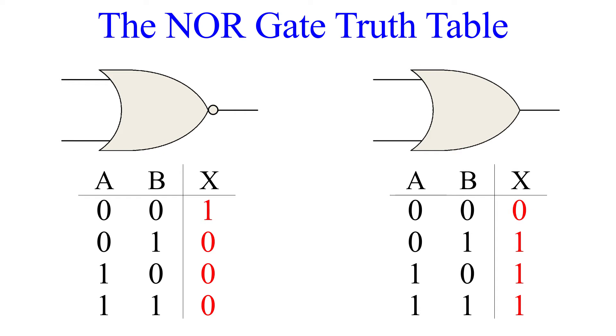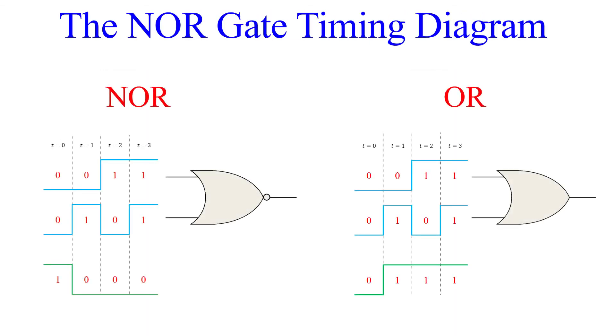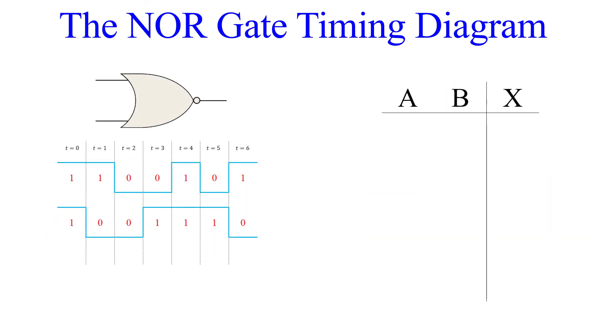Now for the timing diagram. We're going to look at the NOR alongside the OR. Look at the output waveforms. It is apparent that these two gates are inverses of one another. They mirror each other perfectly.